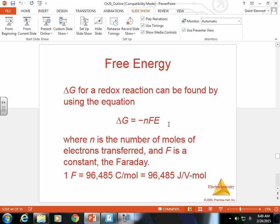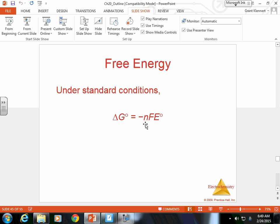In a redox reaction, we can figure out the change in free energy. Free energy is equal to negative n times F times E. Now E is the energy, F is Faraday's constant. Faraday's constant is 1 farad, which is 96,485 joules per volt mole. That constant will be given. N is the number of moles. Under standard conditions, the change in free energy is equal to negative nFE.